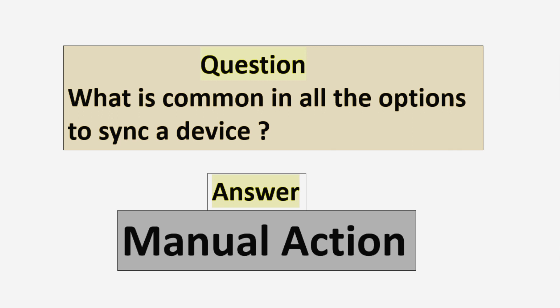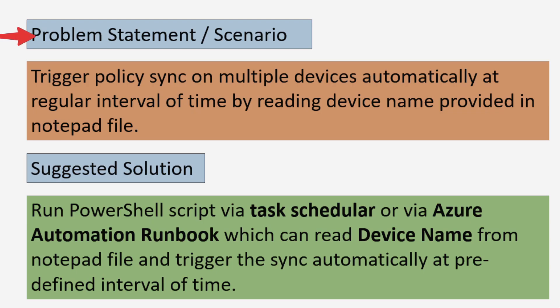The very important question and the reason for creating this video is: what is common in all the options to sync a device? The simple answer is that all sync options require manual intervention. If we have to expedite the synchronization process, we have to do a lot of effort. Now let's talk about the problem statement — the scenario in which this kind of automation is very helpful.